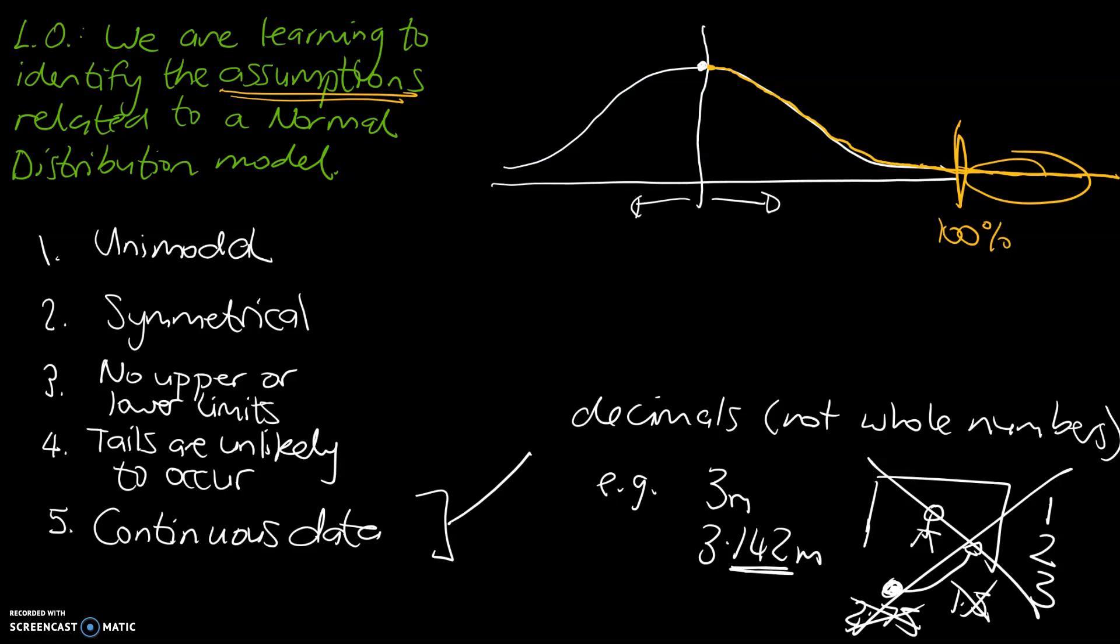So hopefully in your notes book, you've got an understanding or an explanation of the five assumptions that associate a normal distribution model. Most of those assumptions come from the physical shape of a bell curve. Hopefully you found this video useful.